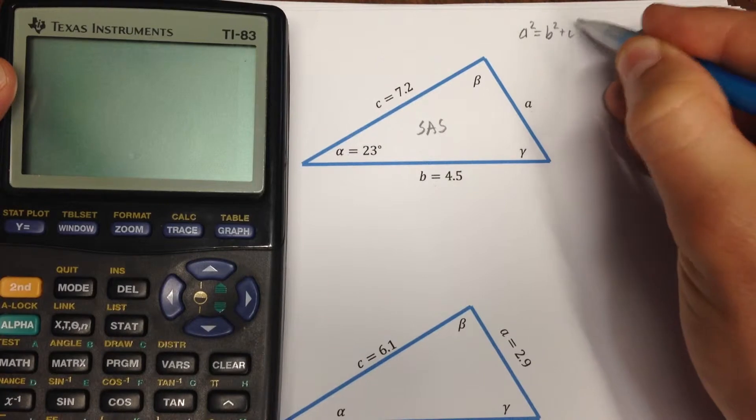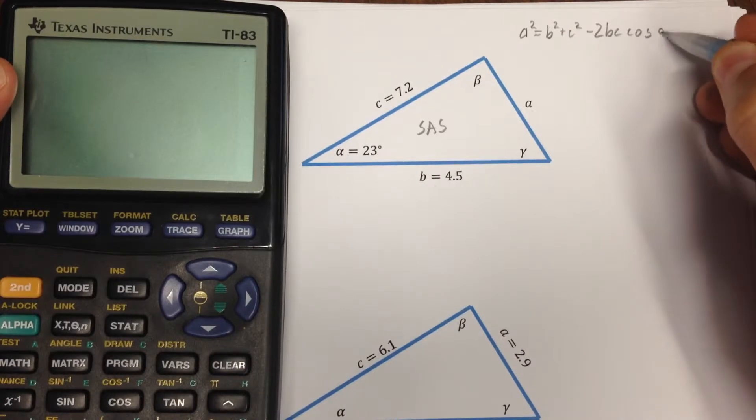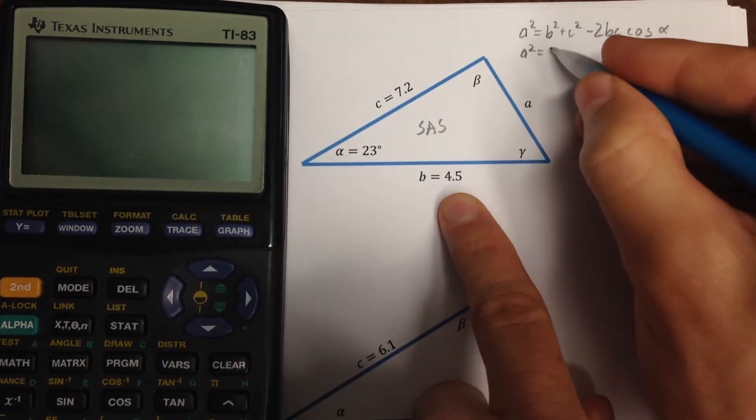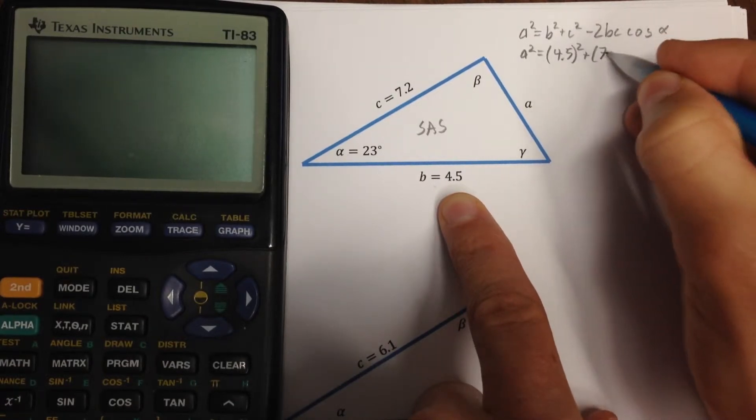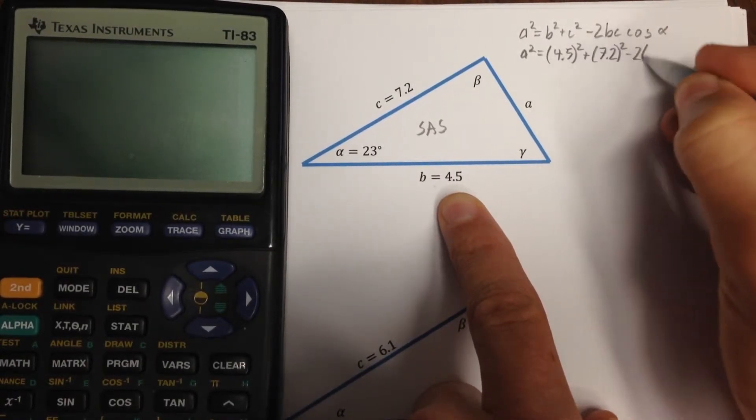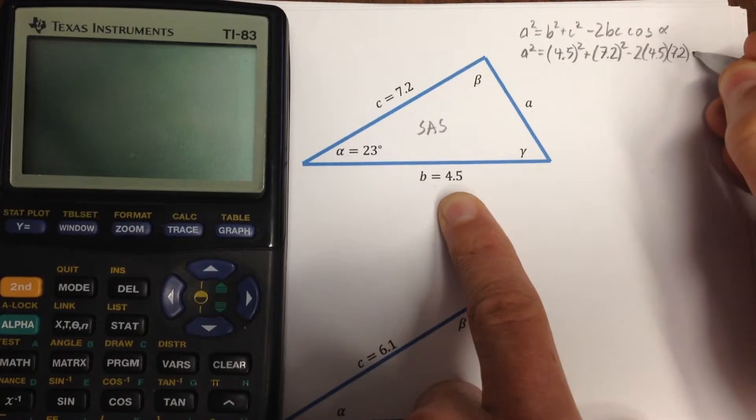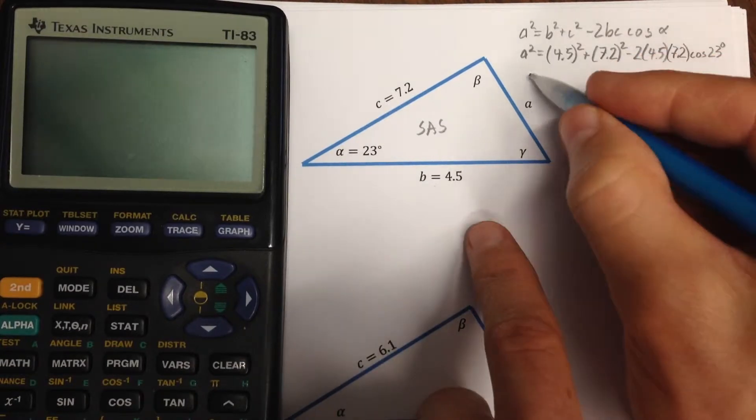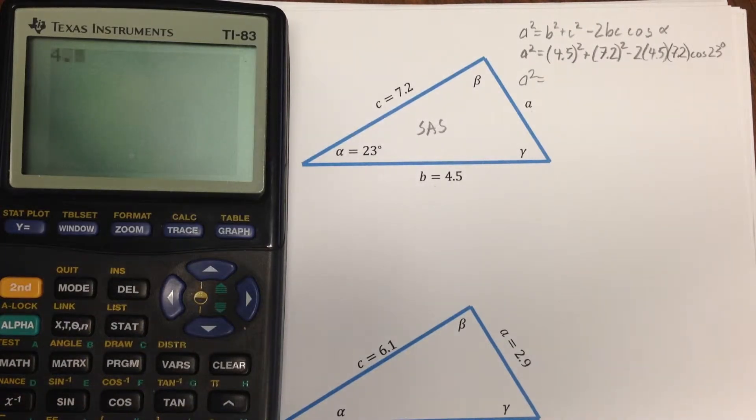a squared equals b squared plus c squared minus 2bc cosine alpha. And I don't know a, but I do know b, I do know c, and of course I do know alpha. So a squared is going to equal all of this mess. This is the sort of place where a calculator is invaluable.